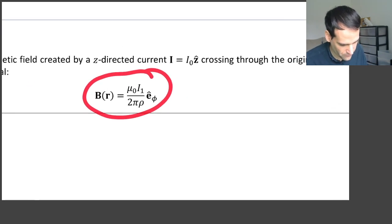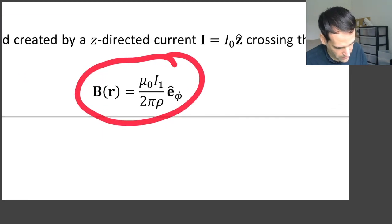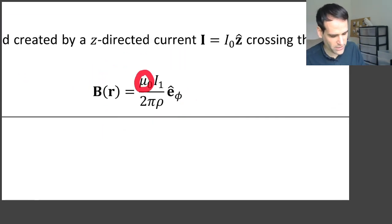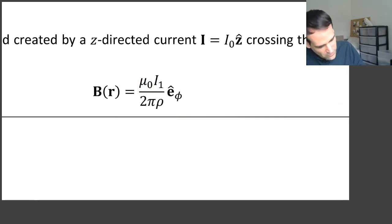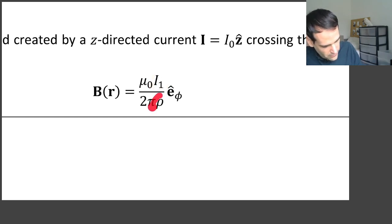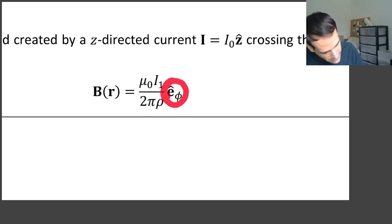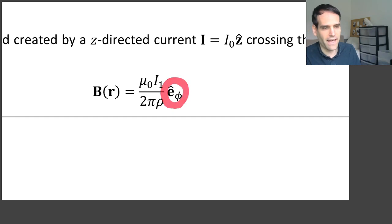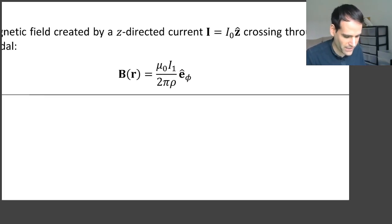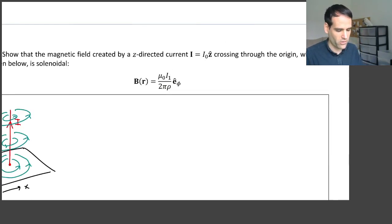This is the magnetic field. We have the permeability of free space, which is a constant, the current of the wire, the distance to the z-axis which is ρ, and then the unit vector φ̂ in cylindrical or polar coordinates. This is the magnetic field of the current, and we need to prove that it is solenoidal.